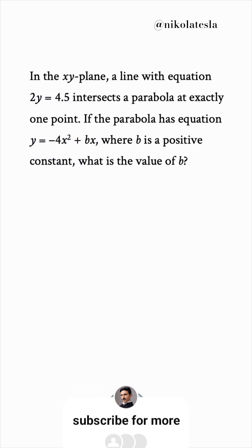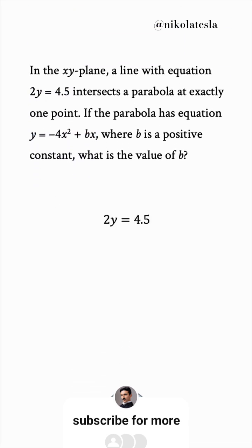We want to find the intersection between the line and the parabola, so we need to equate their equations. Let's divide the first equation by 2 so that it's just y; this gives us 2.25.